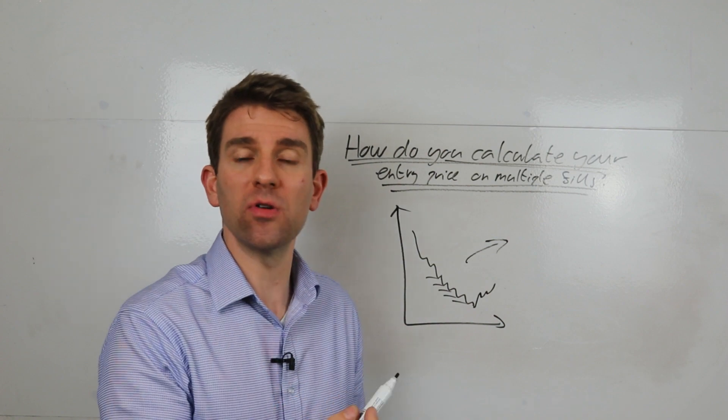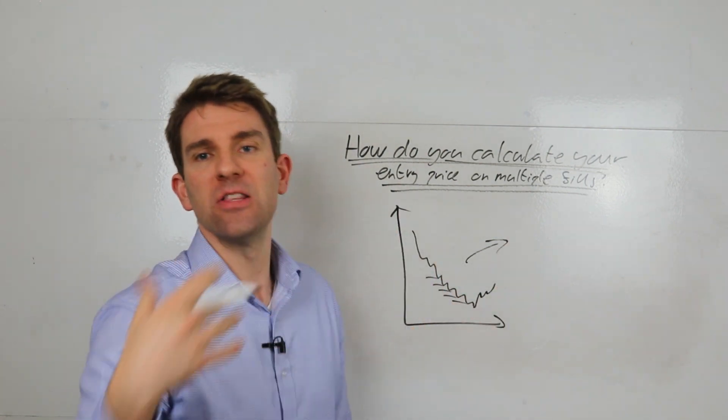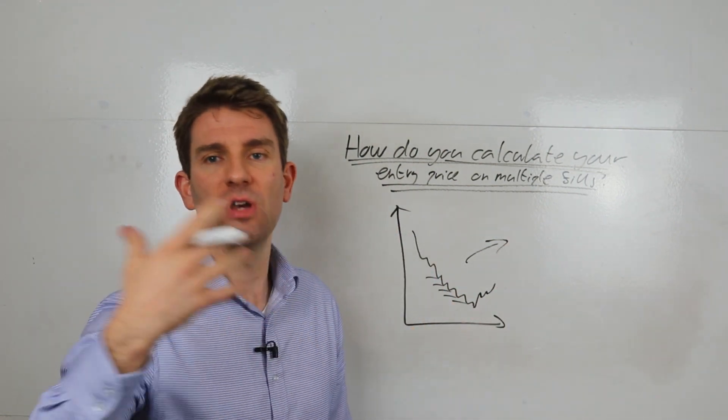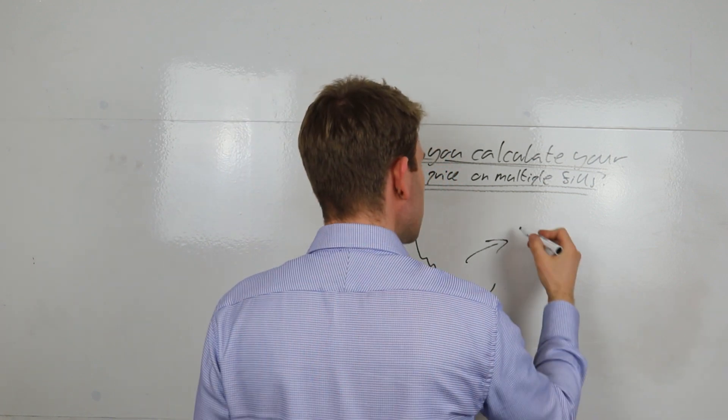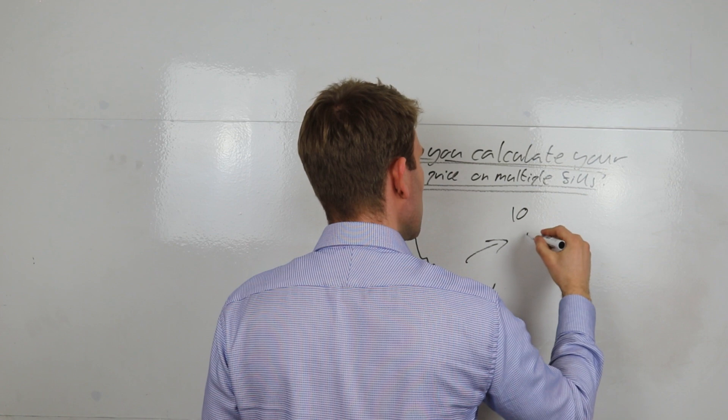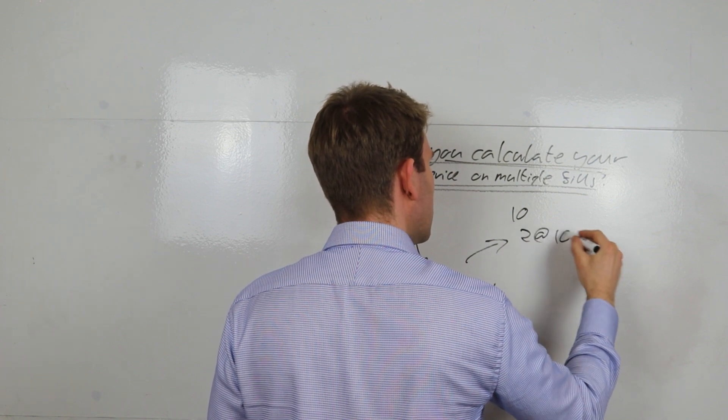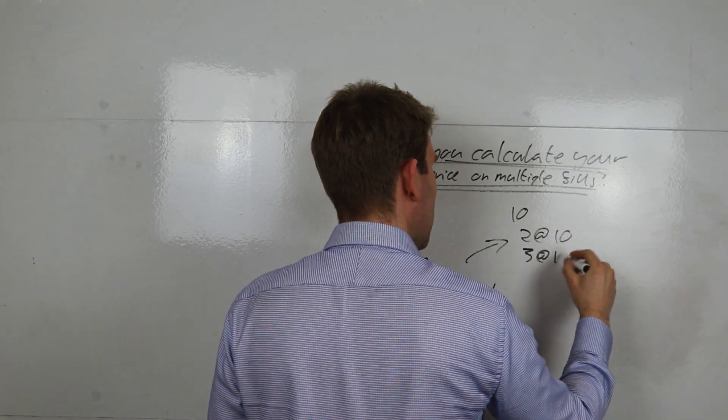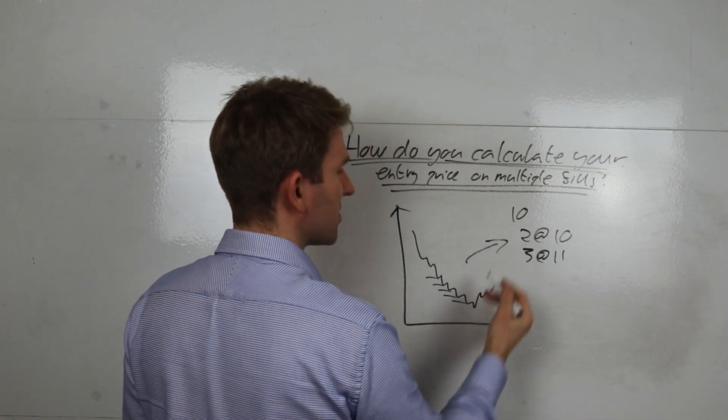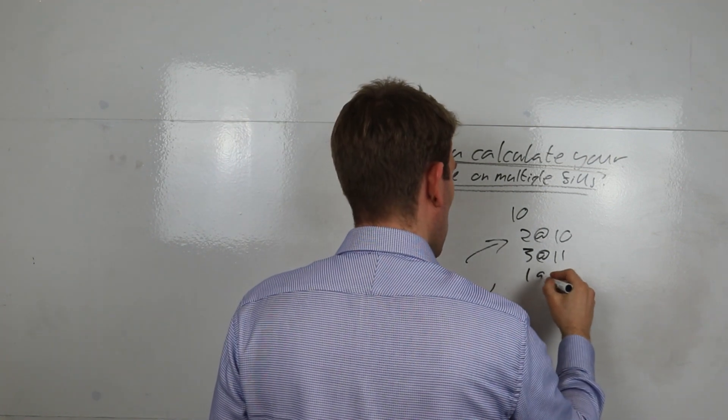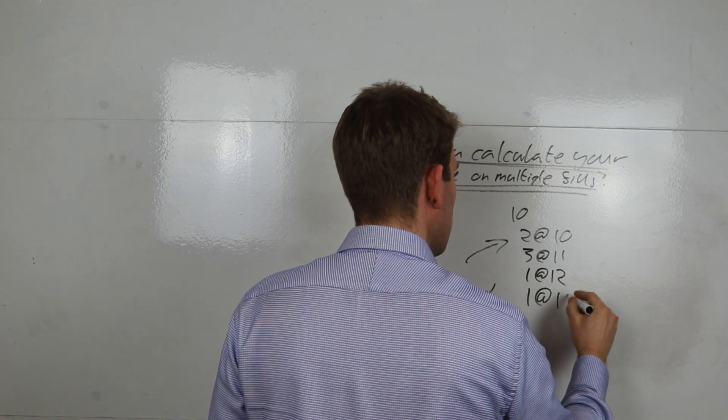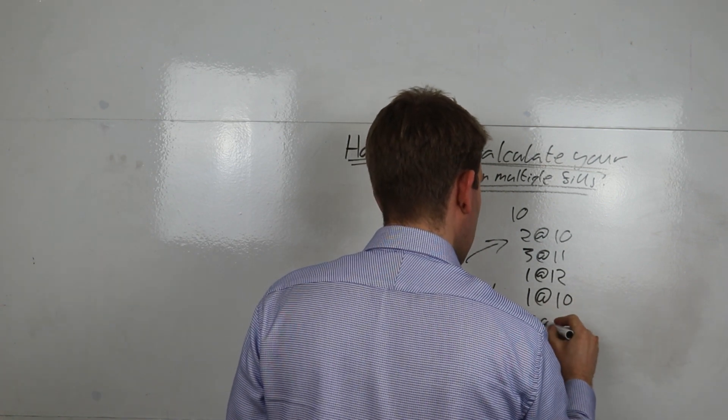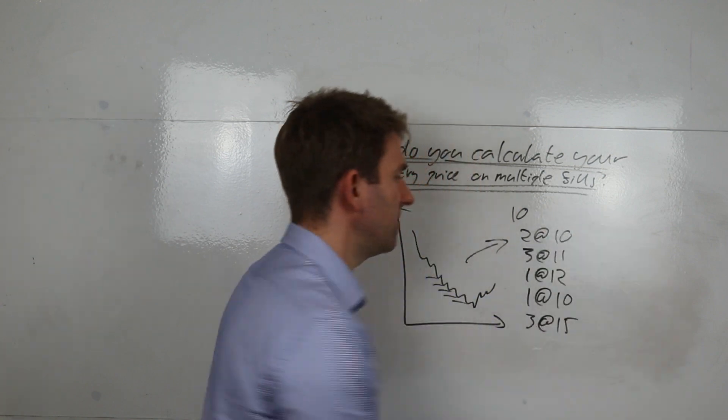Let's say you've done ten orders, so you've done ten contracts, ten pounds a point, ten lots, whatever. Let's say you've done ten in total. Let's say you bought two at ten, and let's say you bought another three at eleven, and this would probably be more of your scaling in. Let's say you bought three at eleven, and you bought one at twelve, and another one at ten, and then you bought your last three at fifteen. Okay, so those are your fills on your blotter.